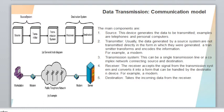The next component is the transmitter. The data generated by a source system are not transmitted directly in the form in which they were generated, because those data are raw data. For transmitting raw data we need to perform some encoding or other operations like modulation. These operations are performed by the transmitter.